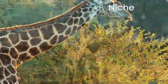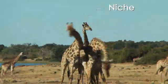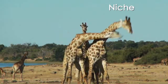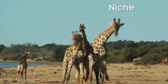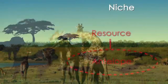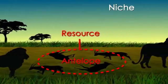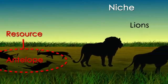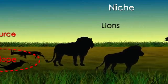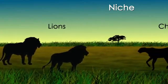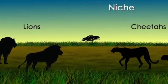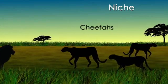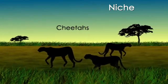Niche is an organism's special role in the ecosystem. What and how something eats, how it behaves, where it lives — all of these things define an organism's niche. Two organisms cannot occupy the same niche for very long. Eventually, one will outcompete the other for food and other resources, forcing the other to move or to go extinct.